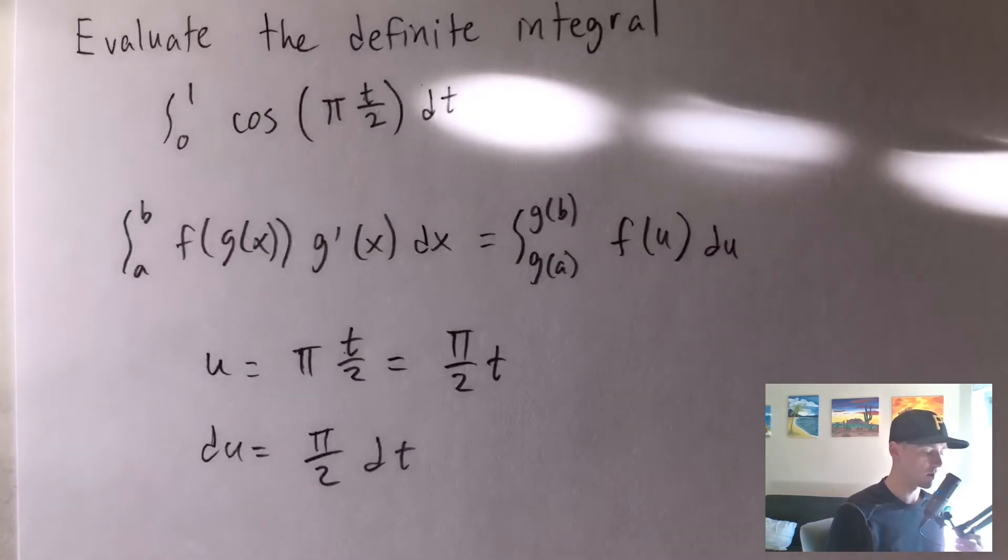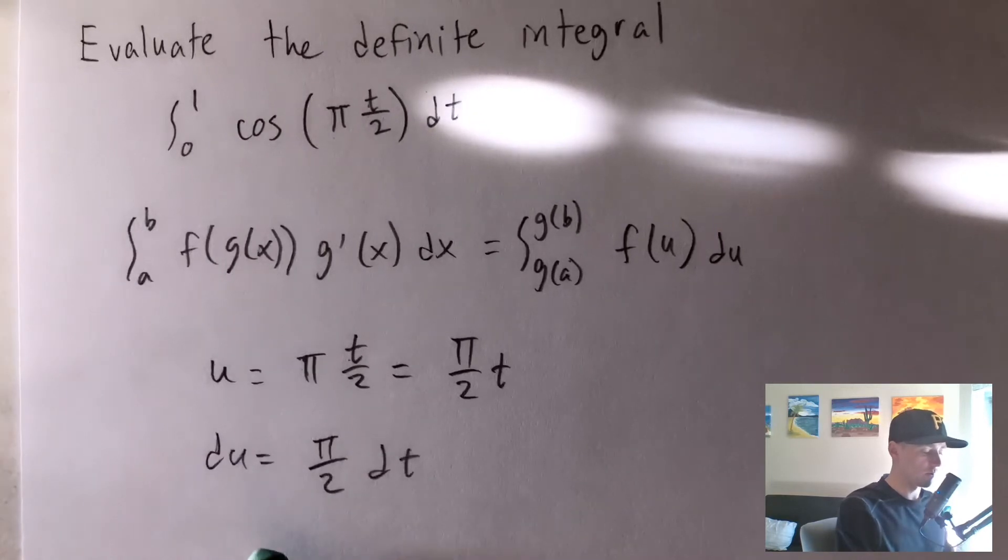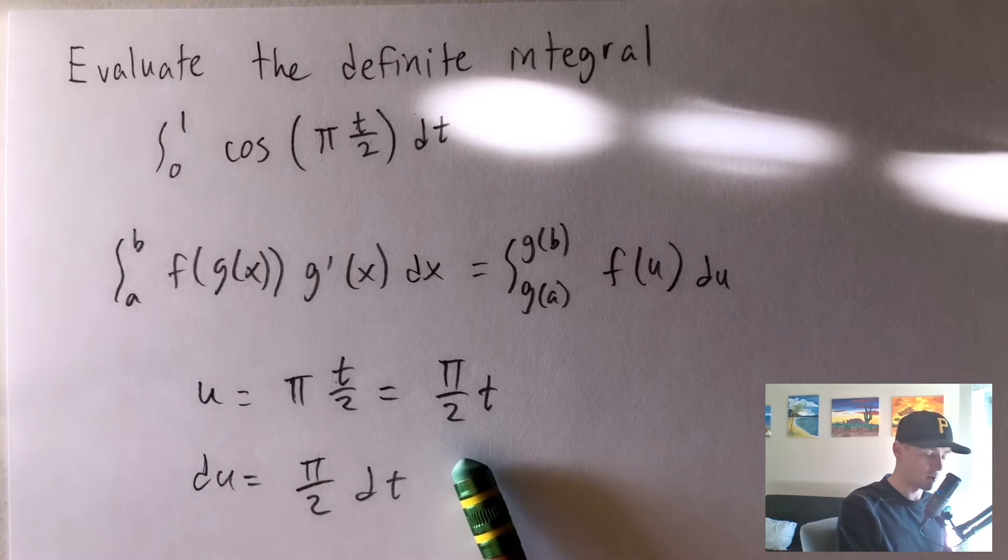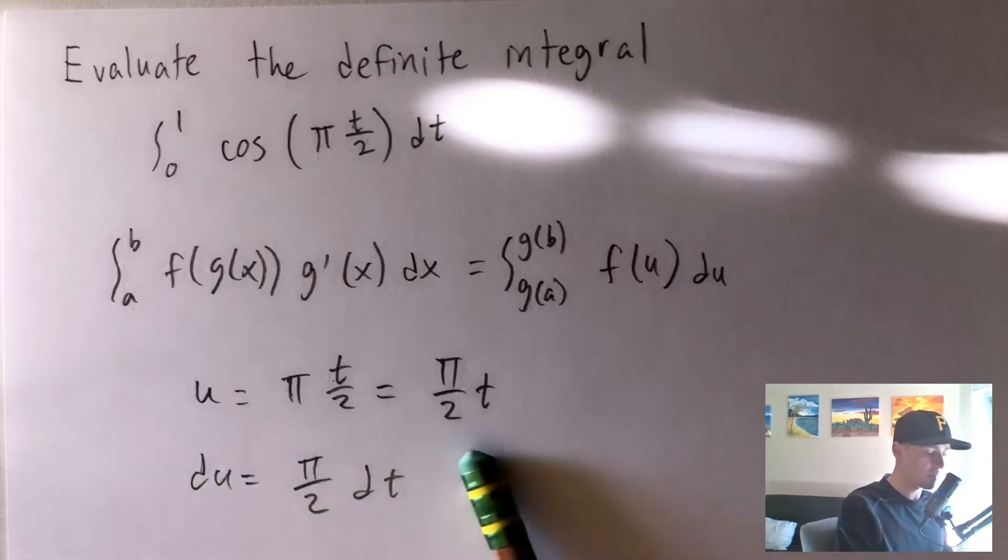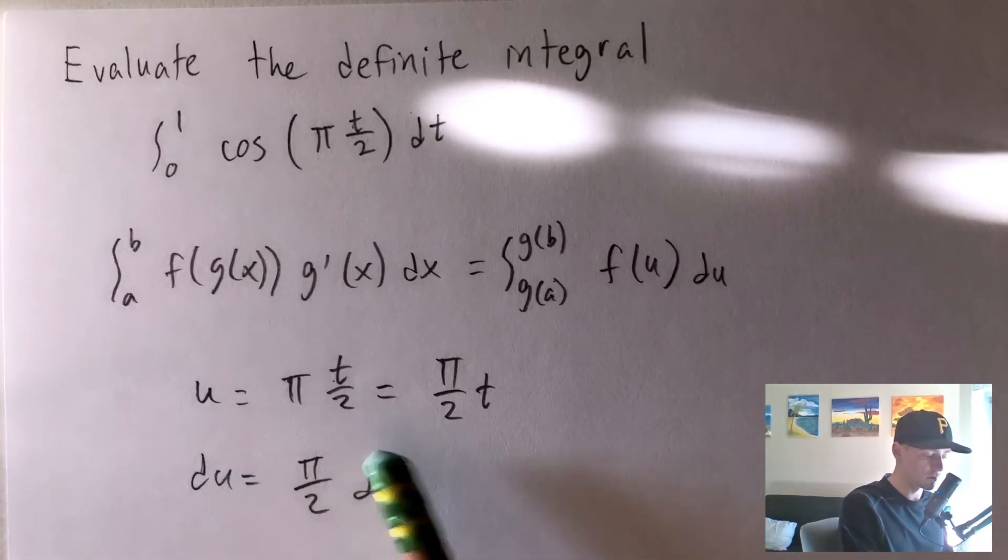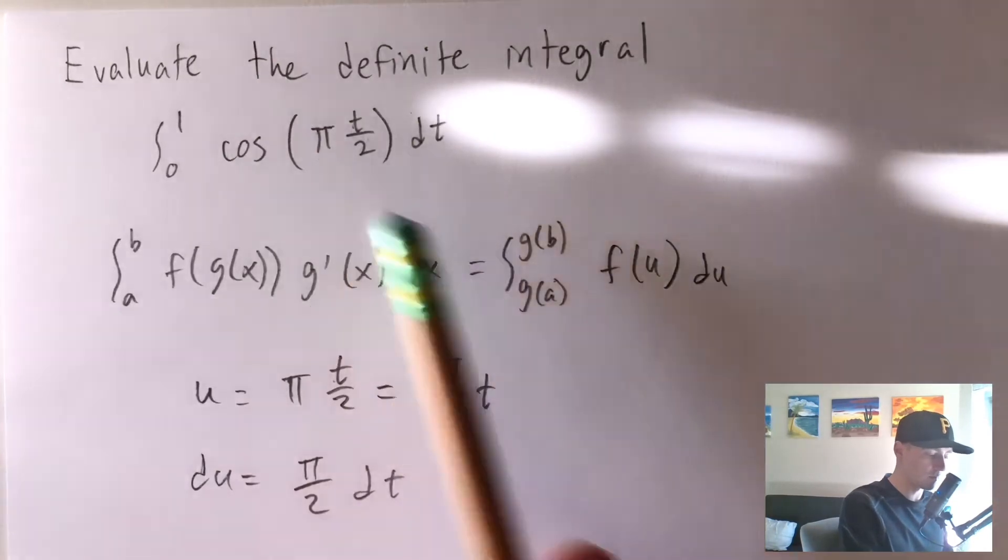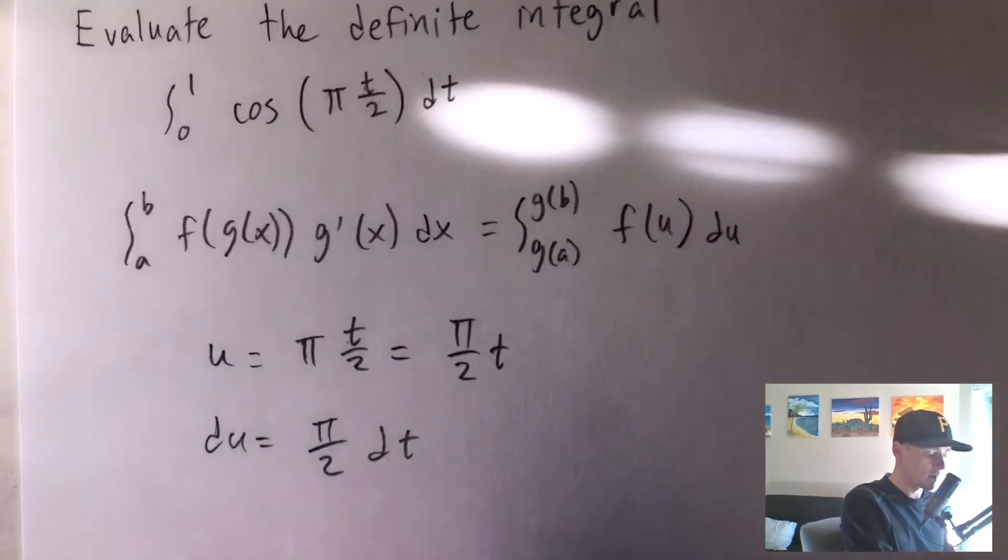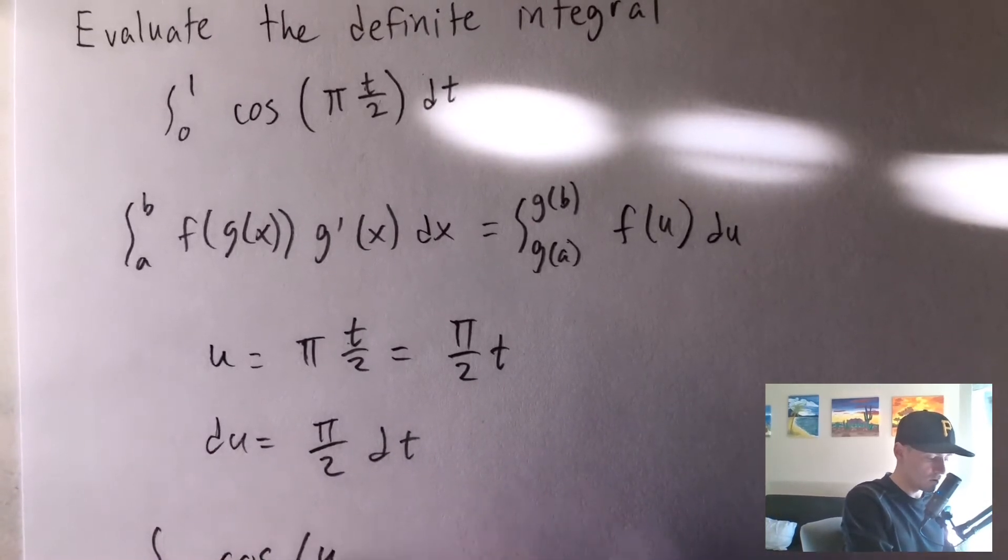And let me show you what I mean by that. Essentially what we need to do here, now that we've figured this out, we want to plug our u into our integral. So we're going to replace pi over 2 times t, which is this whole thing within the parentheses here. We're going to replace that with u. So we're going to get the integral of cosine of u.